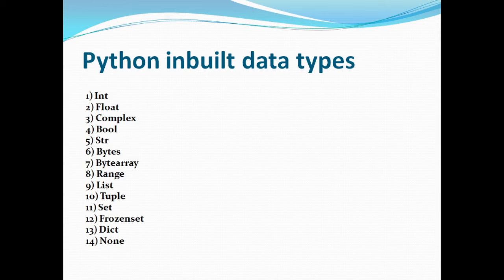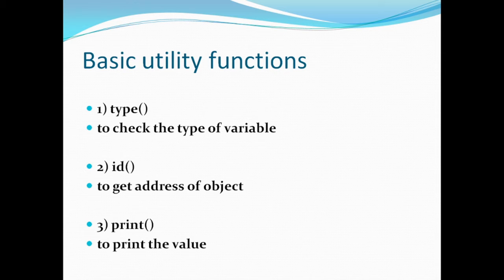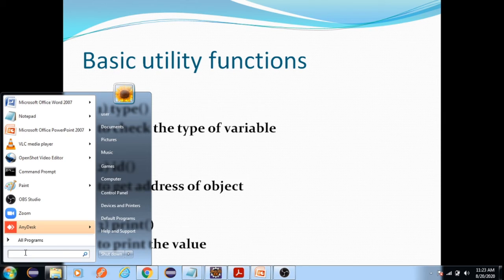We will also have user-defined data types and derived data types, which we will cover in future sessions. When we start with basic hands-on examples we will come across a few utility functions. There are hundreds of utility functions, but at the beginning we will work with a few: type() to check the data type of an identifier, id() to display the memory address of an element, and print() to print the value of an element or display a message on the console. Let us get practice with simple hands-on examples using these utility functions.